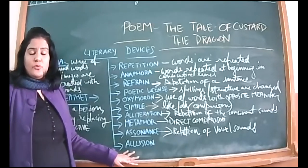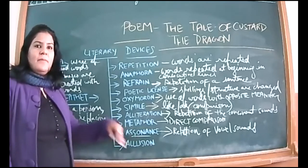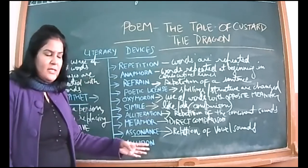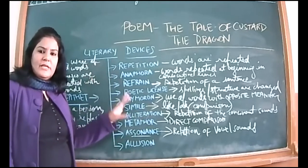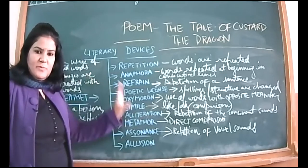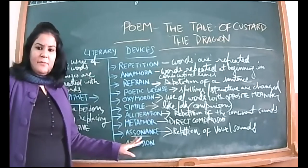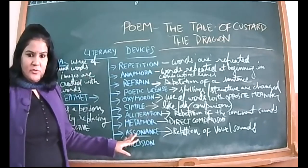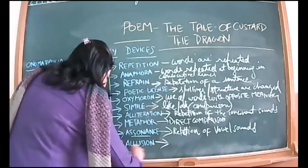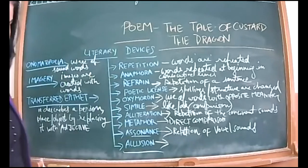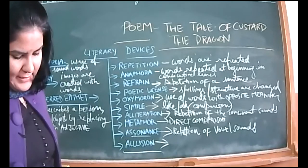Allusion is a device we are going to do for the first time. Allusion is when there is a reference to some other person, place, or story within the poem. In this poem, there is a reference to Percival king — that is an example of allusion. When a reference is given to some other character or place, that is known as allusion.